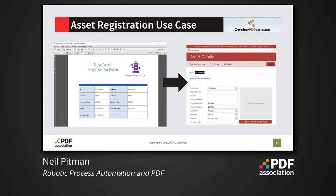For our demonstration we will use an example of asset registration where a simple PDF document contains details of the asset to be registered and this data needs to be entered into an application. Here we're using Microsoft Access to demonstrate RPA manipulating a Windows application. So even though Access has APIs we could use, what we're actually going to do is create a UI flow template that can be automated by RPA, and later we'll also provide a similar example that does use an API.